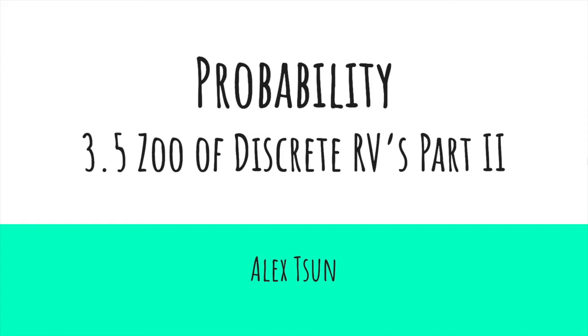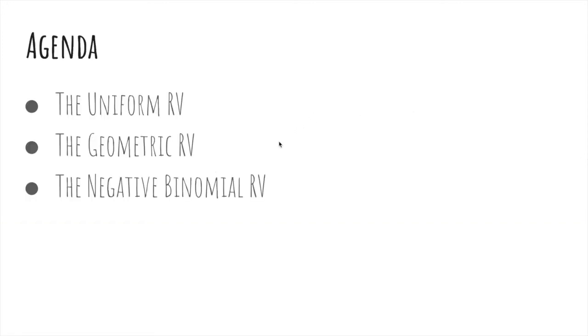In this video, we'll continue our zoo of discrete random variables. We'll talk about the uniform, geometric, and negative binomial random variable.